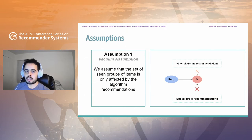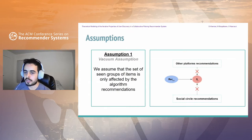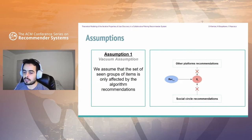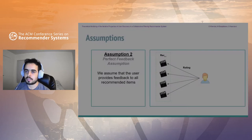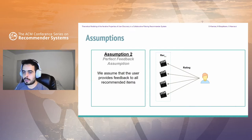Before going through the theoretical results, we define the assumptions used in this work. The first assumption is the vacuum assumption: we assume that the set of seen groups is only affected by the recommendations of the algorithm, with no other factors like other platform recommendations or recommendations from friends. This may seem restrictive, but it is essential to isolate the impact of the feedback loop alone, and has the advantage of allowing us to gradually add more factors in future work. We also assume that the user will rate all the seen items — we call this the perfect feedback assumption. We realize this is not realistic, but it is essential to derive the initial theory and allows us to isolate the influence of the recommender system algorithm from human behavior, which is harder to control.